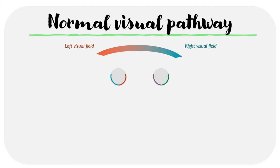As you can see here we have our two eyes and we have the visual field in front of them. At the back of each eye we have the retina, and this retina can be divided into two main parts: the temporal retina on the sides and the nasal retina at the center.